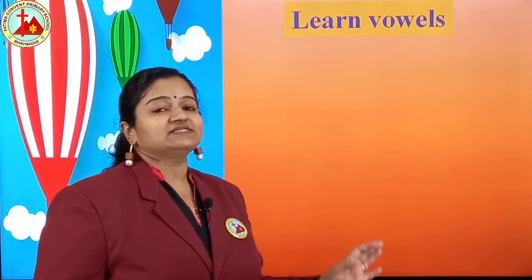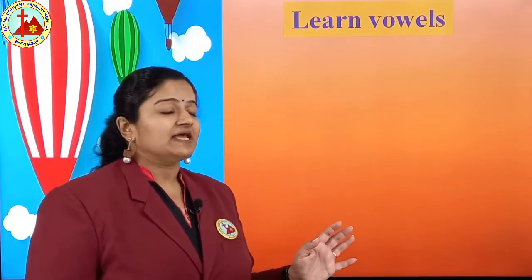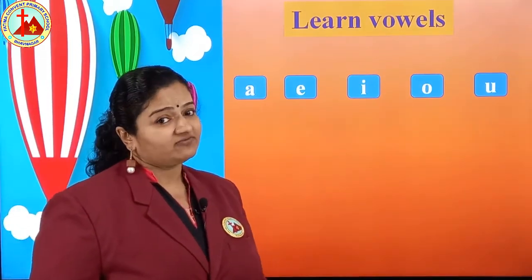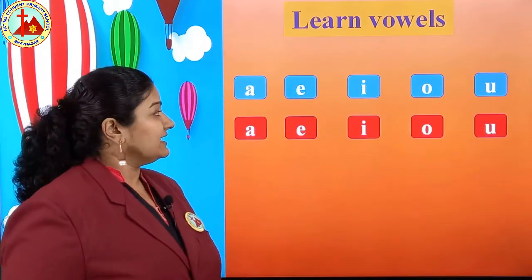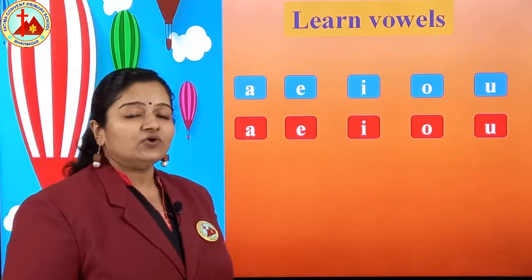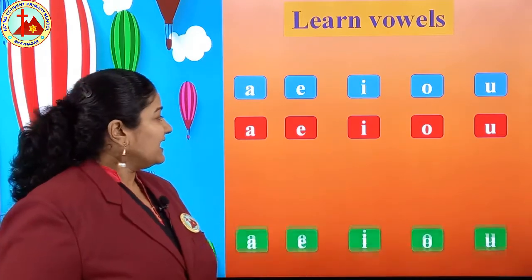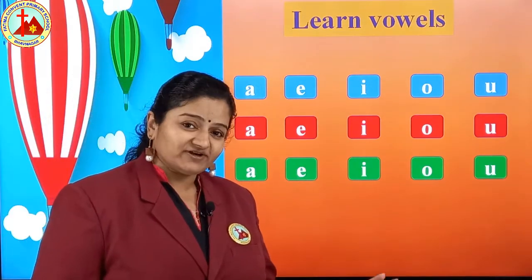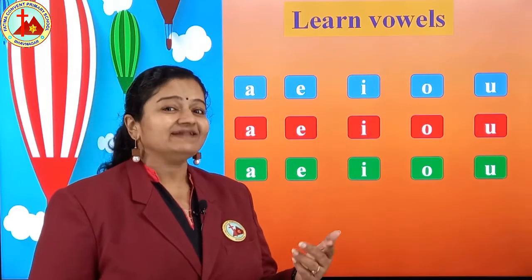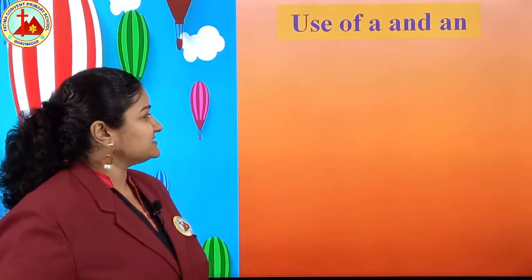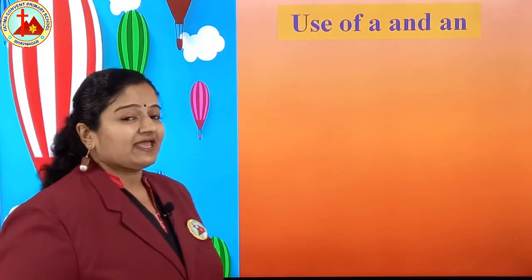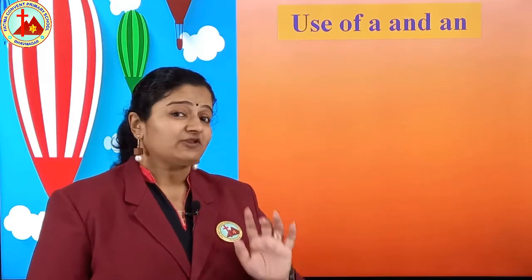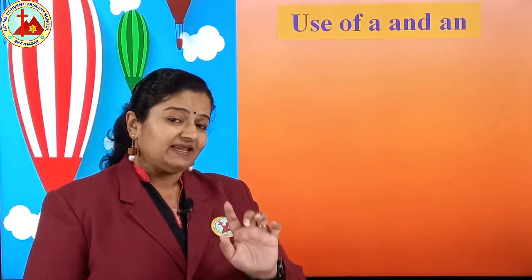Learn vowels. Repeat after miss: A, E, I, O, U are vowels. Before vowels — AN. Use of A and AN. Now you have to put A or AN, but before that you have to see the spelling.